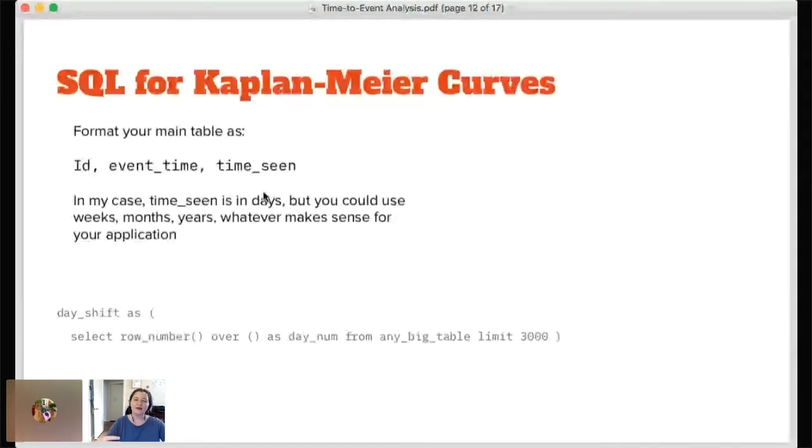And then as a framework for our query, for our next part, we're going to generate a list of the time periods that we want to go over. And we're going to do this with row_number. So we're going to create this table called day_shift by selecting the row_number of over anything from a big table and limiting to 3,000. So I only want 3,000 days. So this is going to give me a list of one through 3,000. And I can play with that and you just use it as a set of numbers.